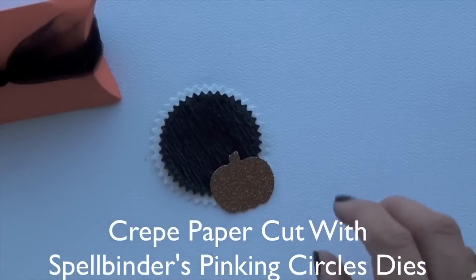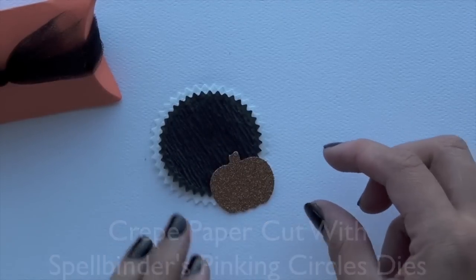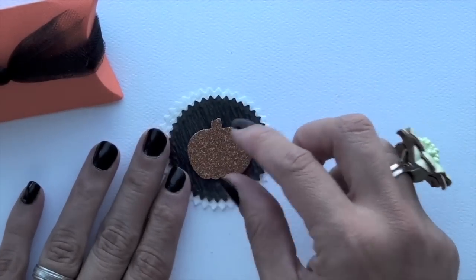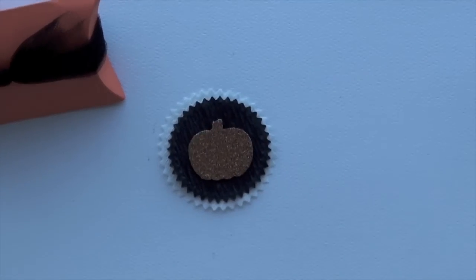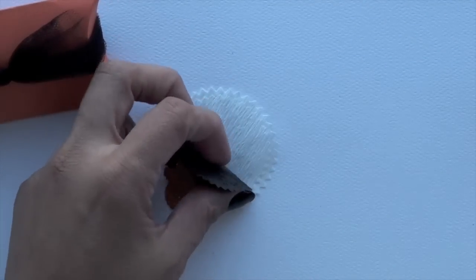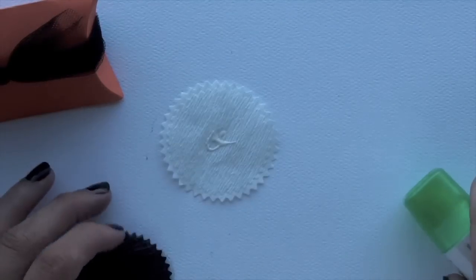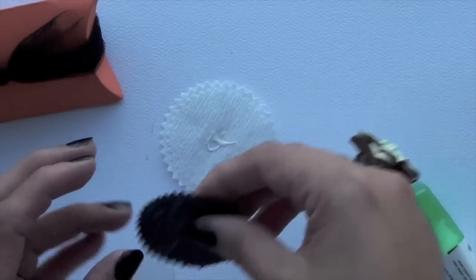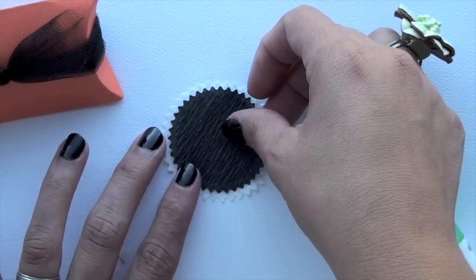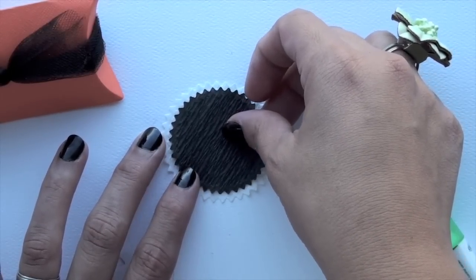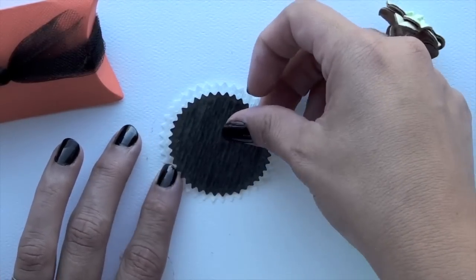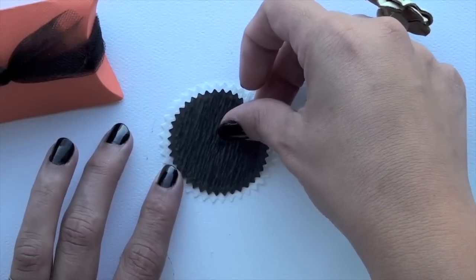I use Spellbinders pinking circles to cut out the crepe paper. Cut them out in two sizes and then use glitter paper to cut out the little pumpkin with the Martha Stewart pumpkin punch. So put a little bit of glue in the middle since that's going to be covered up with the pumpkin anyways and then put the smaller circle on top as such.